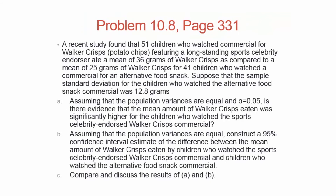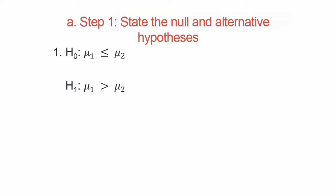So what I want to do now — going back to the question — is there evidence the mean amount of crisps eaten was higher for those who watched the sports celebrity endorsed commercial? That tells me the alternative hypothesis must say that the mean for the celebrity endorsed commercial, which is group one, is greater than the mean for the non-celebrity endorsed commercial, which is group two. The null is mu1 less than or equal to mu2, and the alternative is mu1 greater than mu2. We have a greater-than sign in the alternative, which points me to the right and tells me I only care about high values.